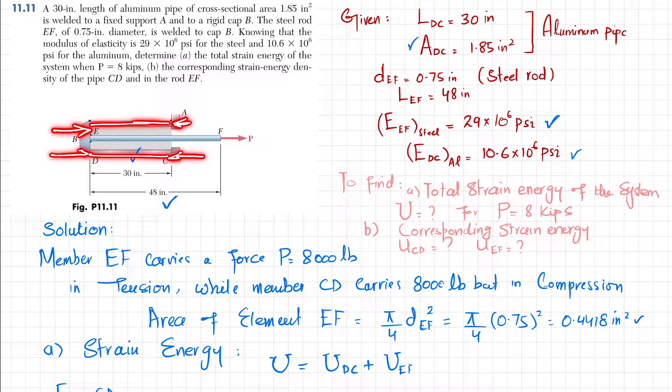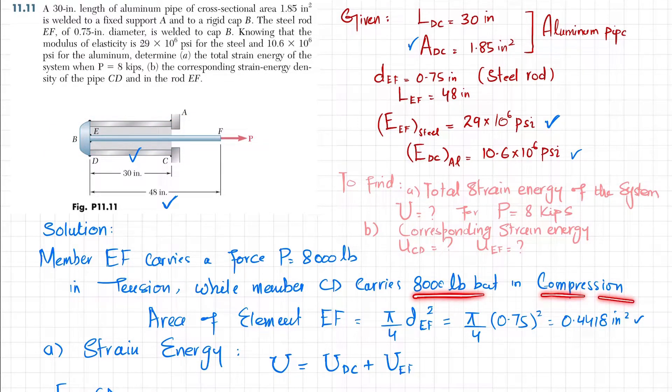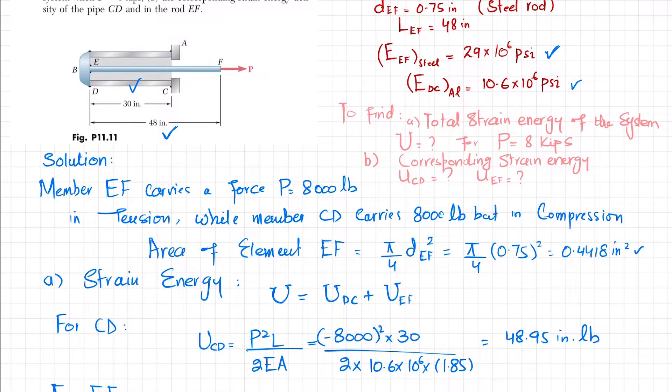Now the area of element EF: the diameter is given, so area equals π/4 times d_EF squared. When you put the value of d_EF, you will get the area as 0.4418 square inches.